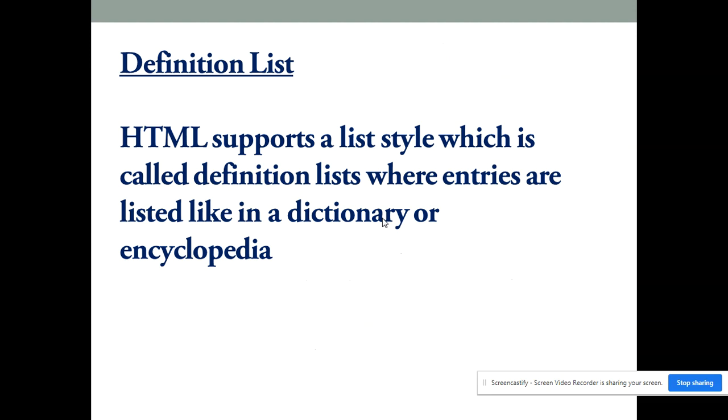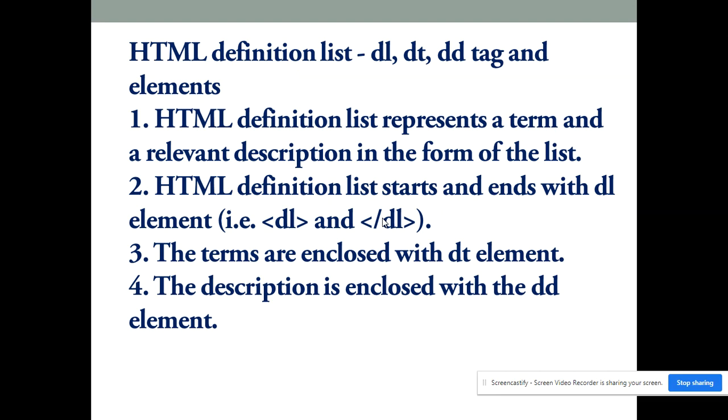First, let us understand what is a definition list. HTML supports a list style which is called a definition list, where entries are listed like in a dictionary or encyclopedia. HTML definition list comes with three tags.